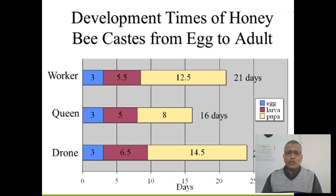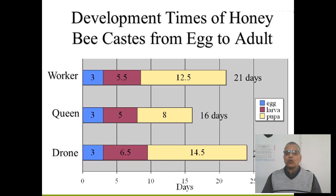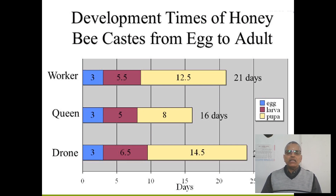Whenever you come to the life cycle of the honey bee, it has four stages — egg, larvae, pupae and adult — and three different forms: queen, drone, and worker. The egg incubation period is 3 days, larval period is 5 to 6.5 days, and pupal period is around 8 to 14.5 days. Total life cycle is 16 days for queen, 21 days for worker, and 24 days for drone.